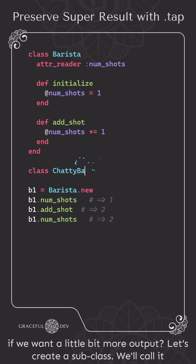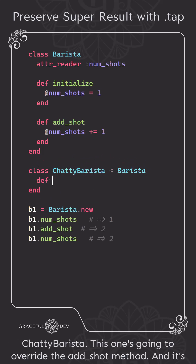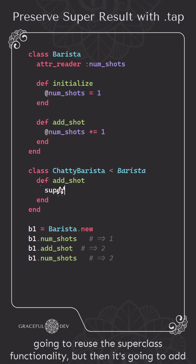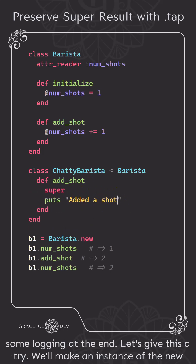But what if we want a little bit more output? Let's create a subclass — we'll call it ChattyBarista. This one's going to override the addShot method, and it's going to reuse the superclass functionality, but then it's going to add some logging at the end.